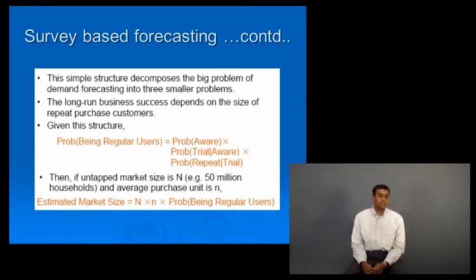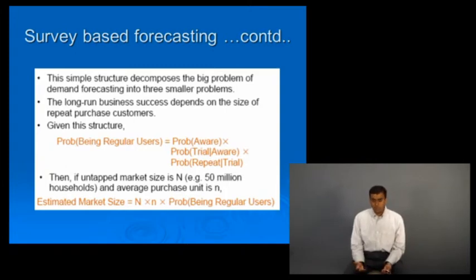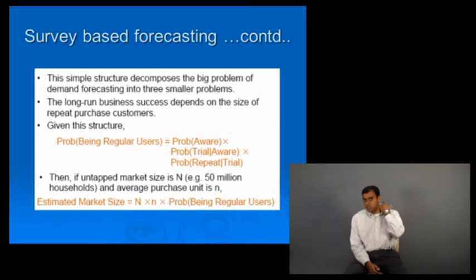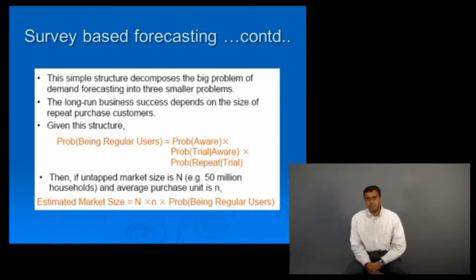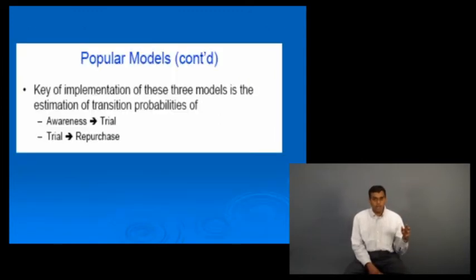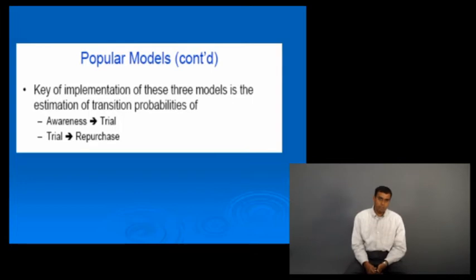But getting these probabilities is the tricky part, because often what you get is people's attitudes. You cannot observe behavior directly, so you ask people how likely they are to buy, and then you have to estimate how many of those attitudes will translate into actual purchases.